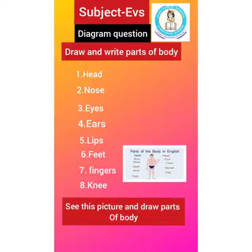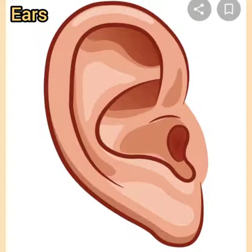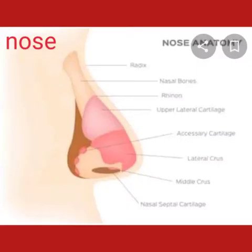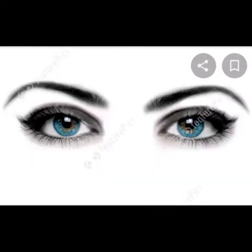Now we discuss parts of the body. Parts of the body are our external parts: head, nose, eyes, ears, and many more parts of our body system. See the pictures — first is the head, now the ears, now the nose, and next are the eyes. These are also parts of the external organs.